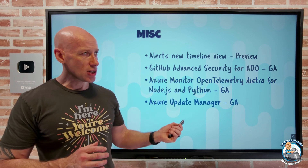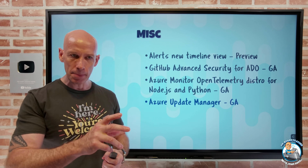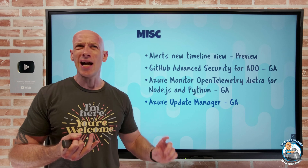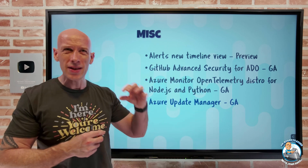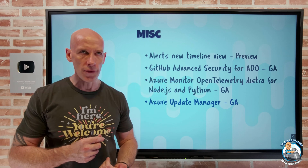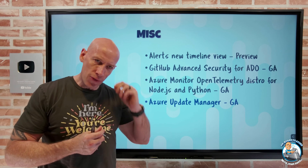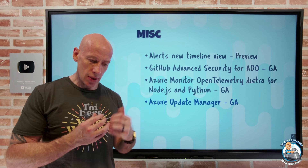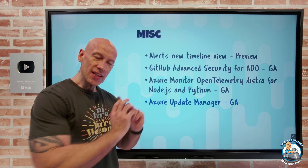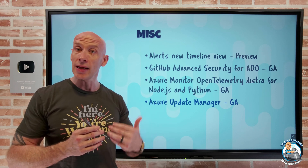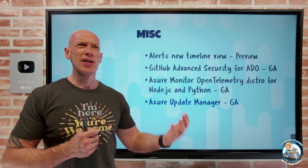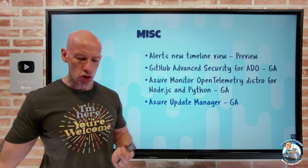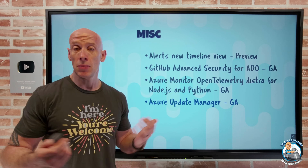Finally, Azure Update Manager has gone GA — previously known as Update Management Center. This replaces the old solution, which relied on Azure Automation, the Azure Monitor Agent, and a Log Analytics workspace. The new solution removes all of those components, uses its own native store for state, and is a full SaaS solution for both Windows and Linux patching. Machines can be anywhere: in Azure it uses the regular Azure VM agent; elsewhere you Arc-enable it and it uses the connected machine agent. You can group machines by resource group, tagging, subscription, and more to drive scheduled patching with full rollout control.